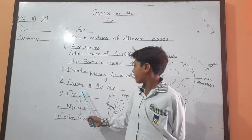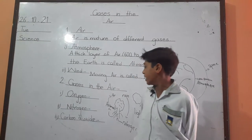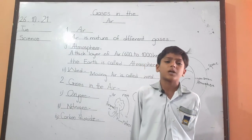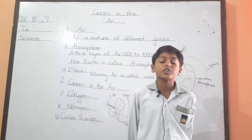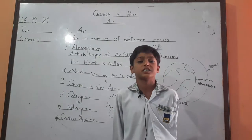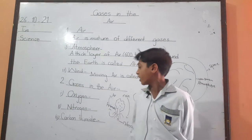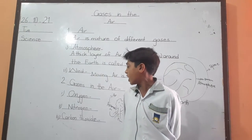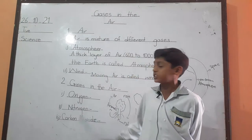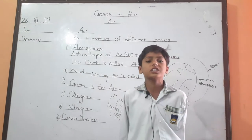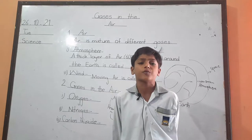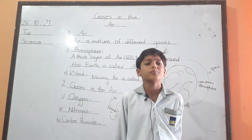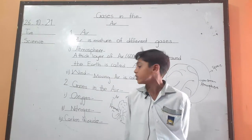Air is a mixture of many gases. Some gases are oxygen, nitrogen, and carbon dioxide. Oxygen is very important for all living things. Oxygen is present 21% in the air.